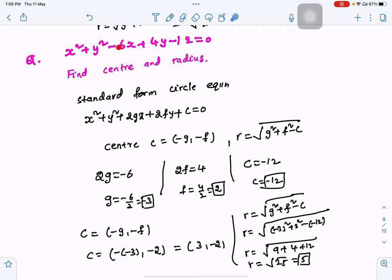We compare the standard formula to the standard formula. In the standard formula, x is 2g. Here, the circle equation is minus 6. So 2g is equal to minus 6.